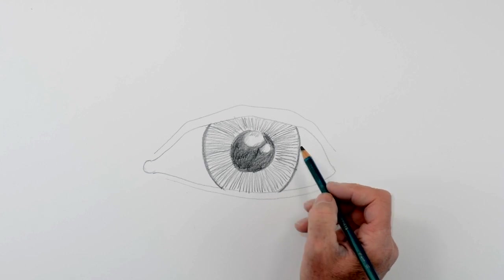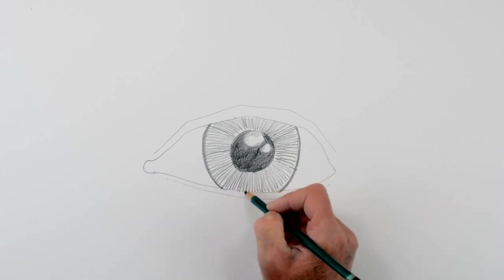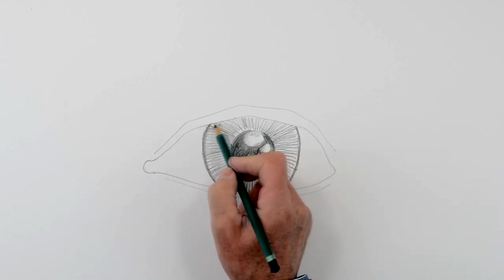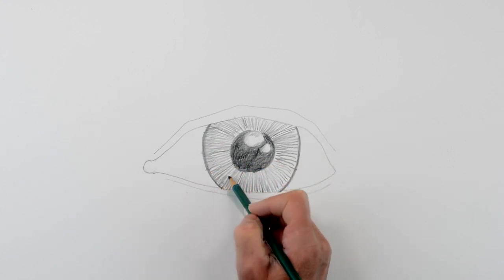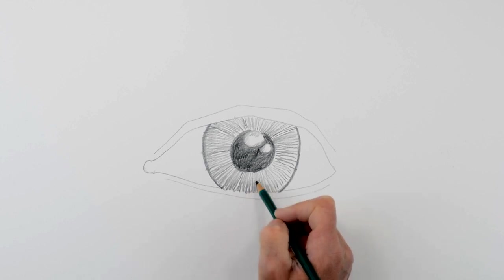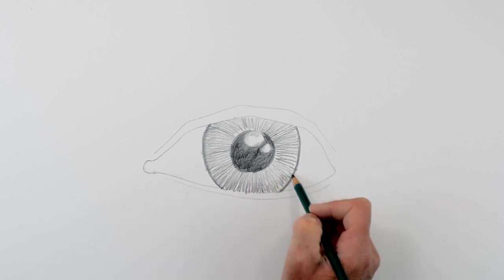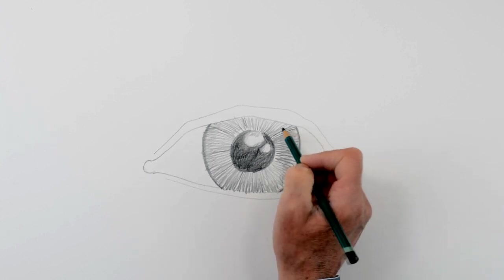You can see once we've gone around here like this, the eyeball is beginning to look a little bit more realistic. And you can just go around the edge slightly, just a little bit further. Just a touch of shadow around the edges just to make it look a little bit more round.